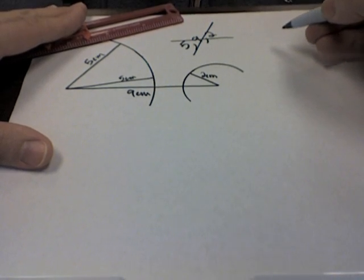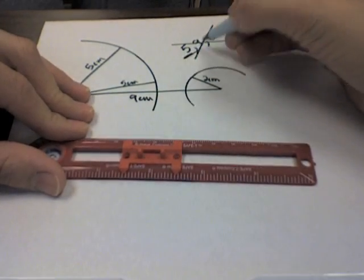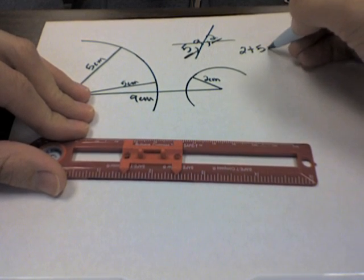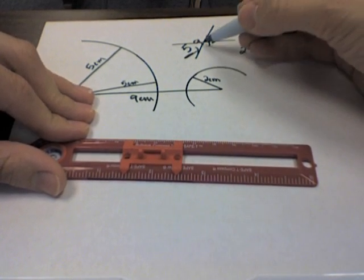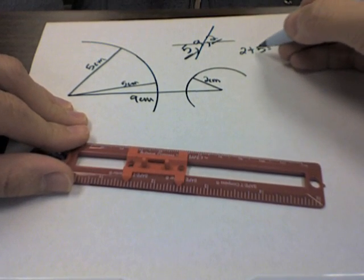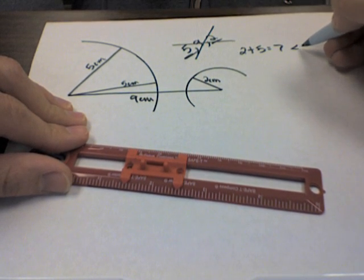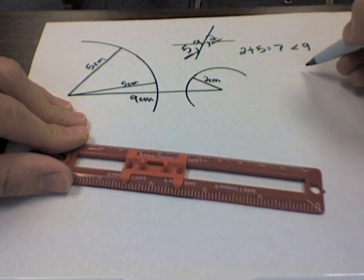Now, there is some math you can do to not have to try and draw this out every time. If you take the two smaller numbers and add them up, you get 7, which does not make 9. This sum of the two smaller sides of the triangle has to be bigger than the third side in order for it to work. So if that's less than the third side, it's not going to work.